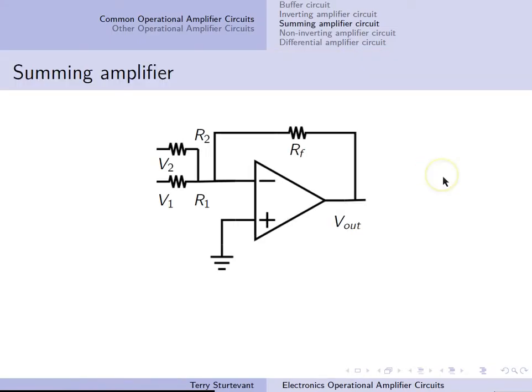The summing amplifier looks like this, which as it suggests, sums the voltages on these two inputs. The output is minus RF times V1 over R1 plus V2 over R2. The minus sign means the output is inverted from either of the inputs, and the proportion of the inputs that are added depends on these two resistors. This can be extended to as many inputs as you'd like.